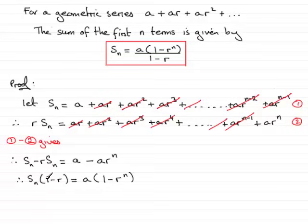So therefore, if I divide both sides now by 1 minus r, I therefore have the sum of the first n terms of the geometric series, S_n, equals a times 1 minus r to the power n, all divided by 1 minus r. And that proves this result.